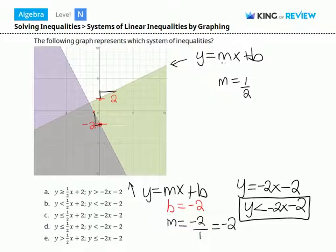And b, which is our y-intercept, we determined was 2. The equation of our line is y equals 1 half x plus 2.